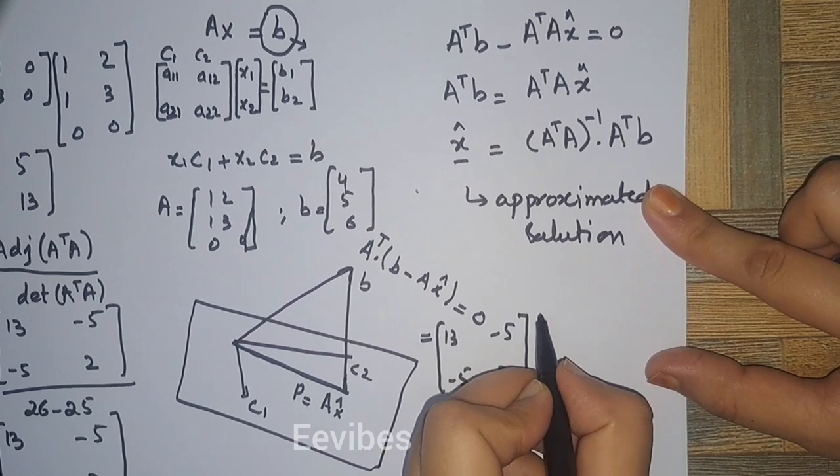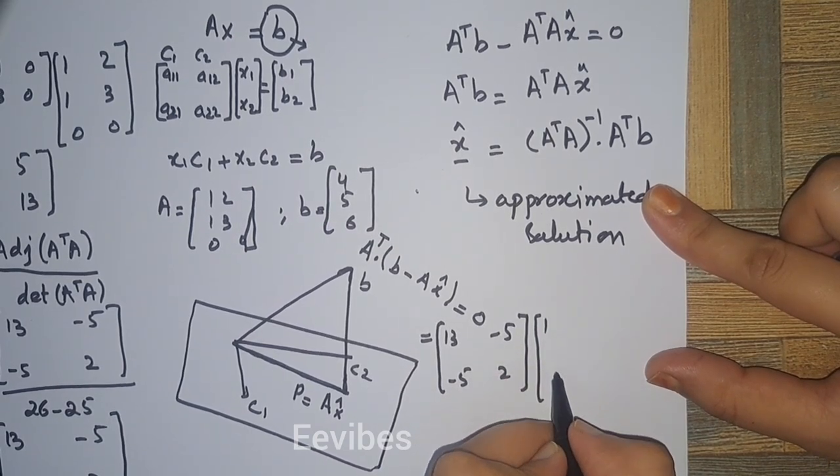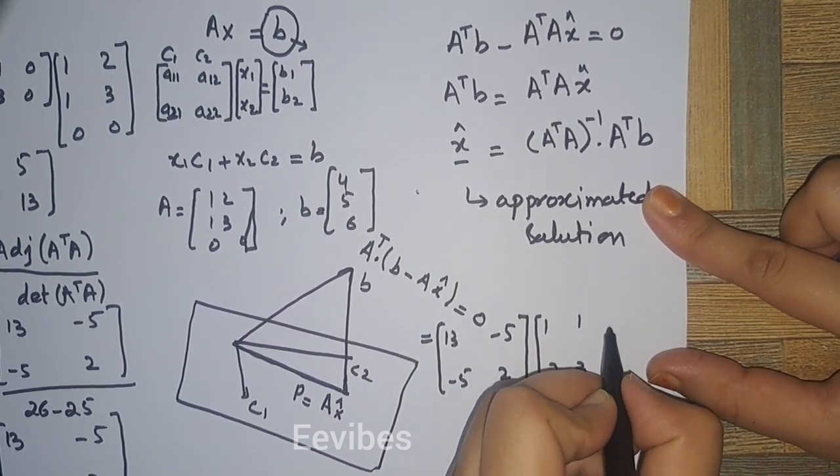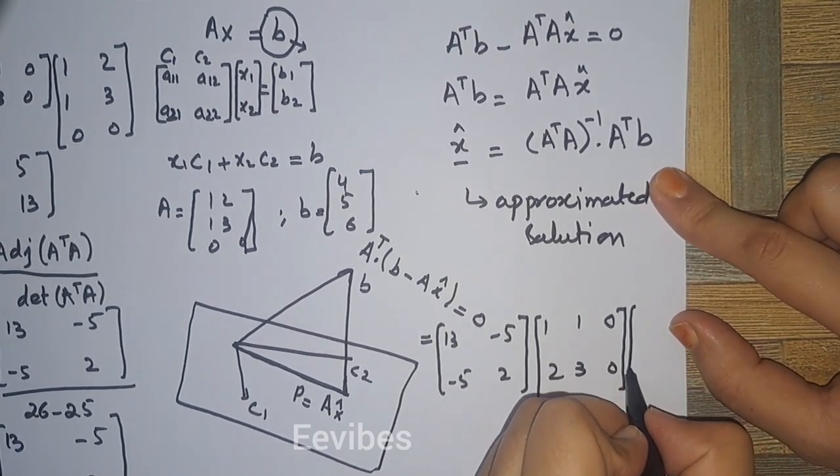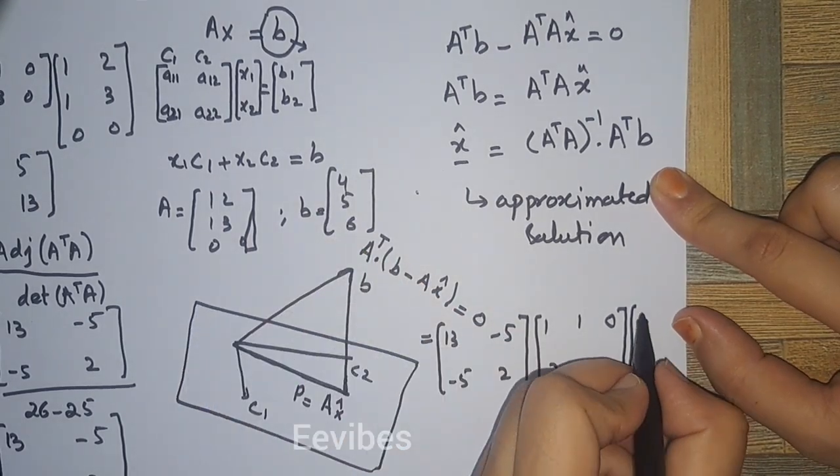This will be multiplied with A^T, which is equal to [1, 1, 0; 2, 3, 0], and then you have to multiply it with B, which is equal to [4, 5, 6].